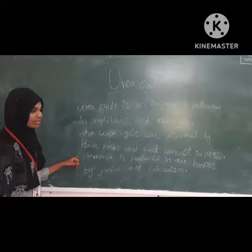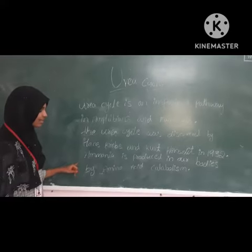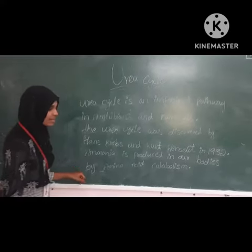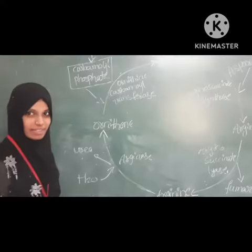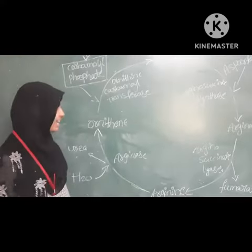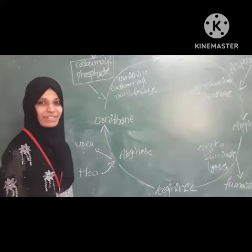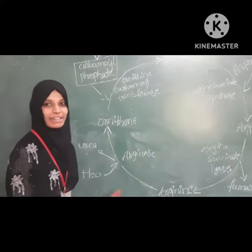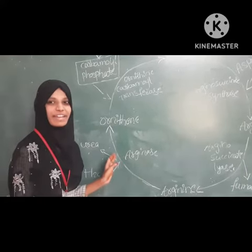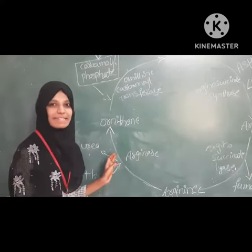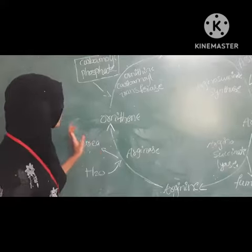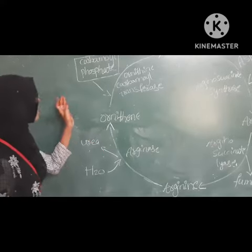Ornithine is produced in our bodies by ornithine acetyltransferase. The Urea Cycle starts in the mitochondria, after which the final step takes place in the cytoplasm.